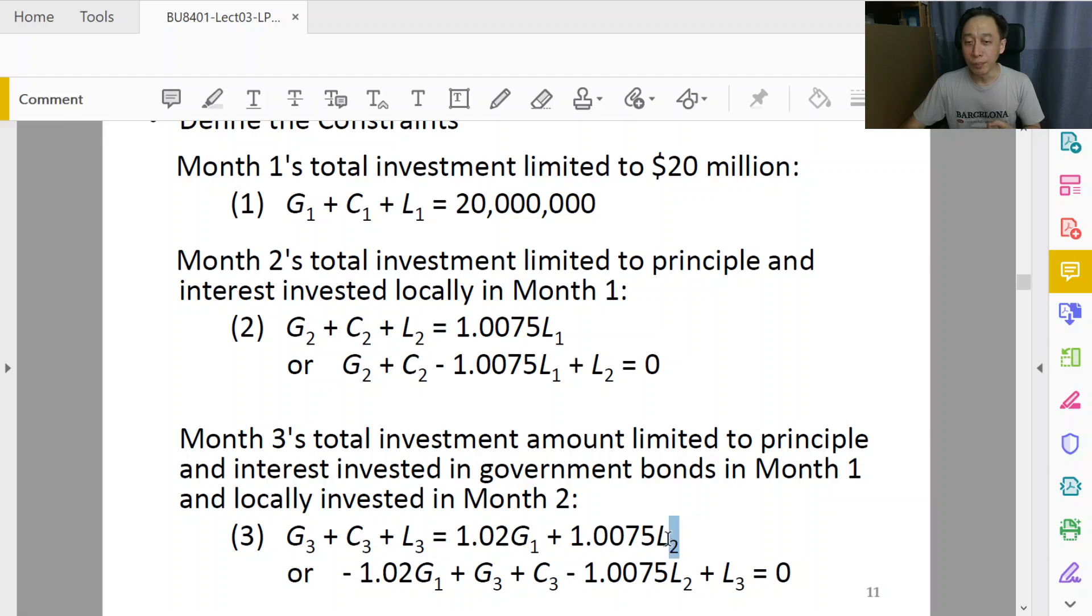One more question: why don't we have 1.0075 squared times L1? Usually we do compound interest that way, right? We don't have to, because the sequence of L1, L2, L3 live from month to month. So whatever was compounded into L1 and left over, once you have the compound interest, part of it may go into G1, C2, or G2.